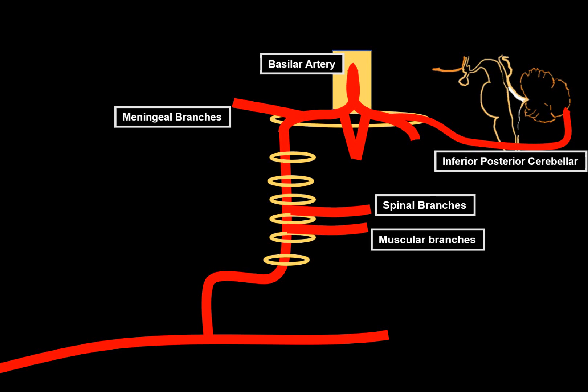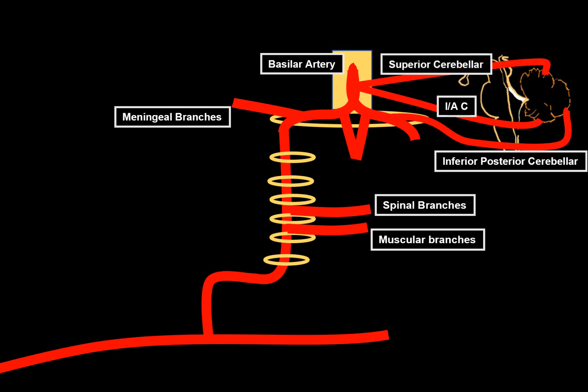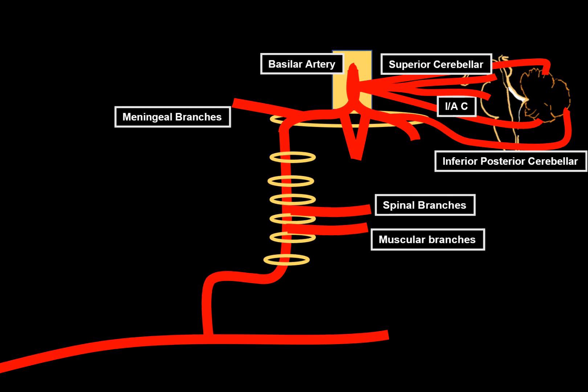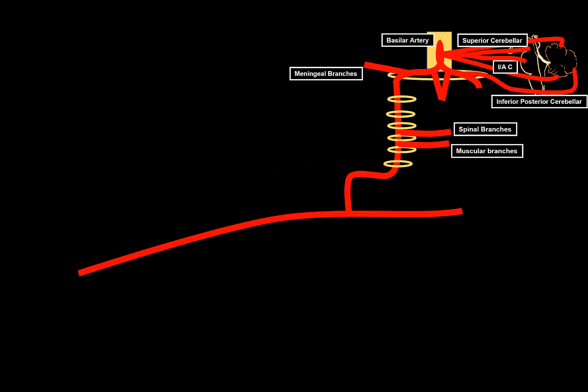For the basilar artery, there's the inferior anterior cerebellar artery and the superior cerebellar artery — the major blood supply of the cerebellum — and then branches supplying the pons and the mesencephalon, or the midbrain. That's the vertebral artery.